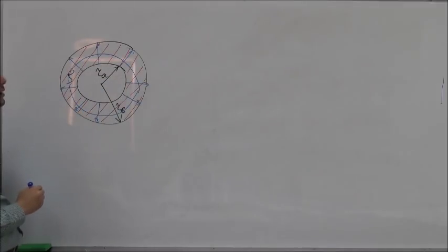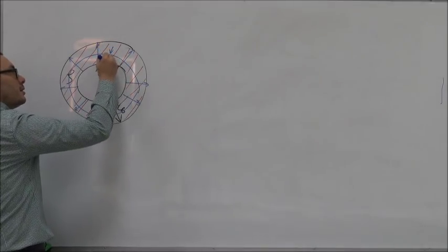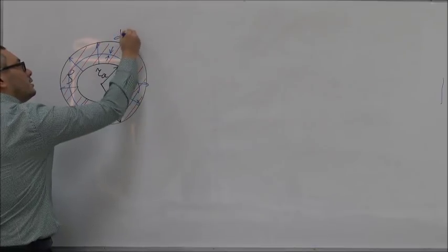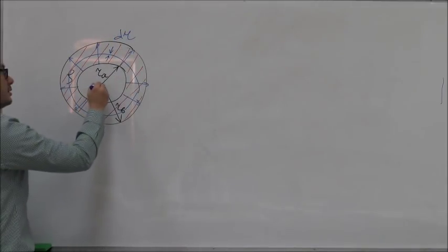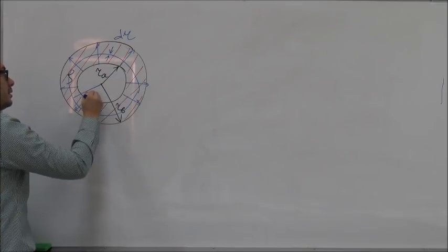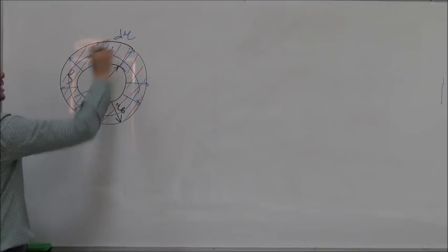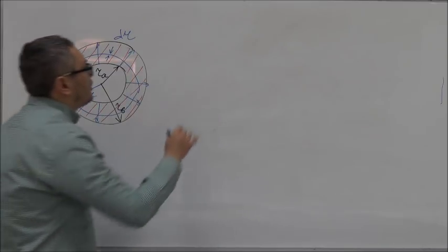A spherical shell of thickness DR at radius R. So imagine you have a spherical shell of radius R, and the thickness of that spherical shell is DR.